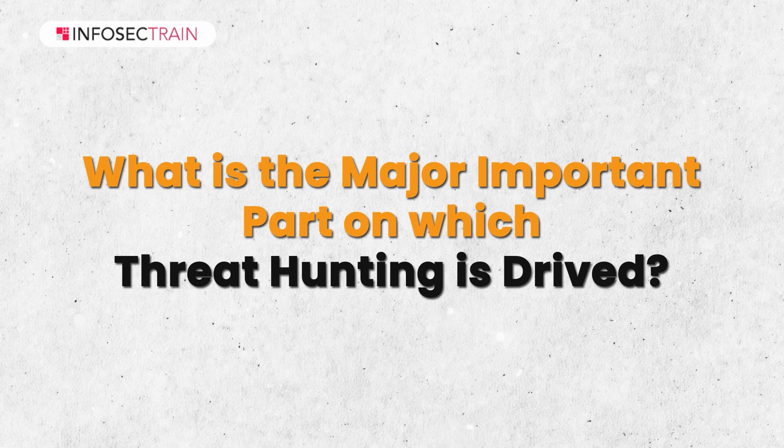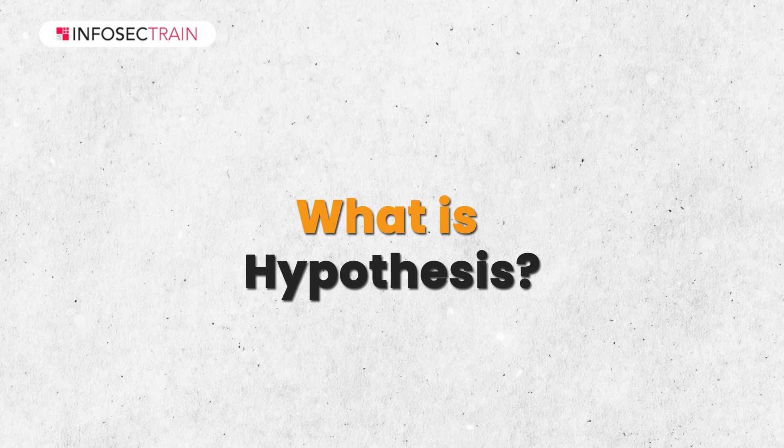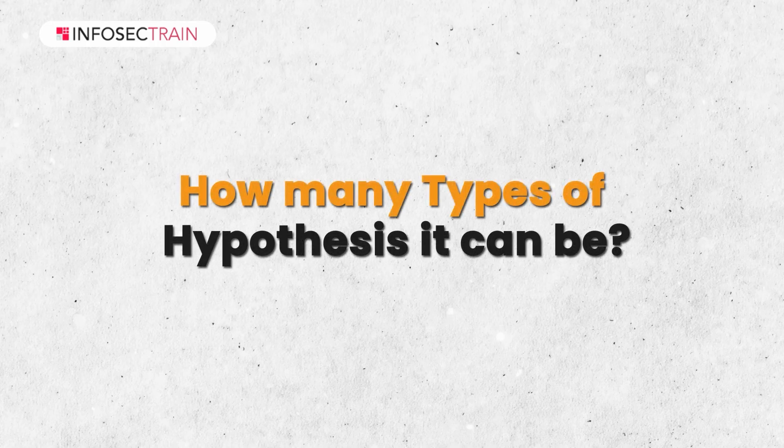Question number two: what is the most important part on which threat hunting is derived? One of the most important parts is hypothesis. Every threat hunting engagement has its scope defined by a hypothesis. A hypothesis is an assumption we make while doing threat hunting in order to determine our scope and what sort of data needs to be tested or investigated.